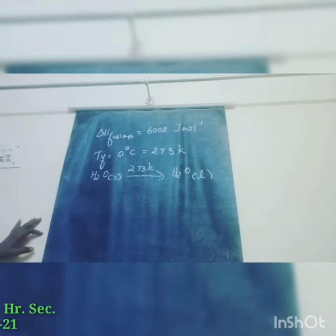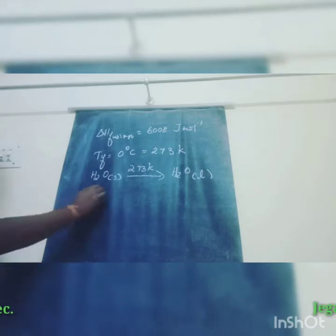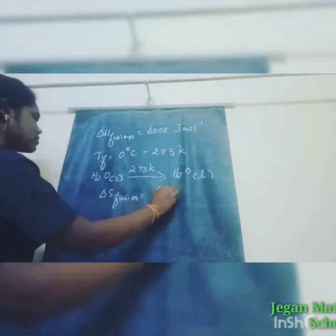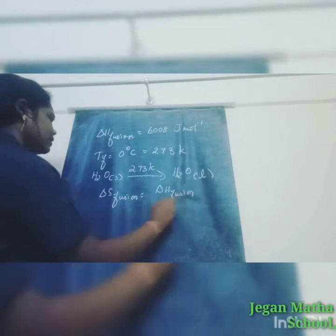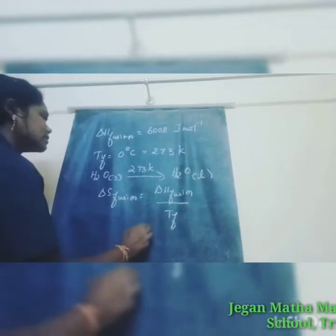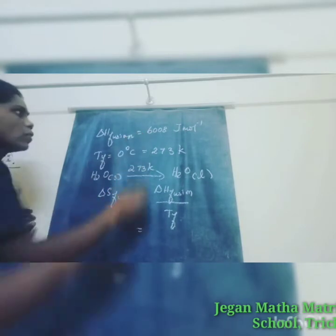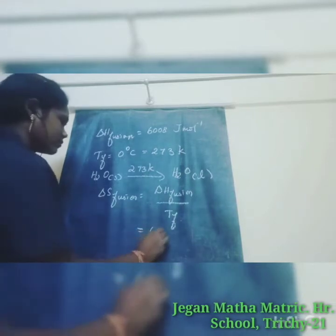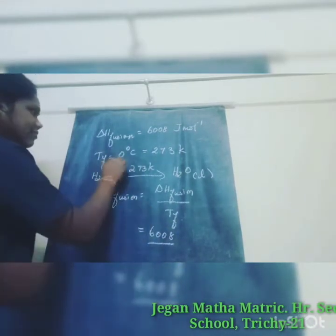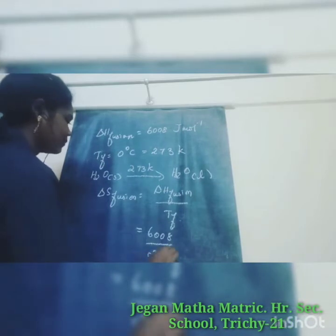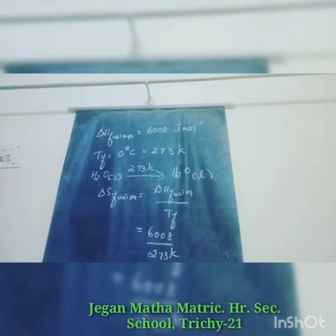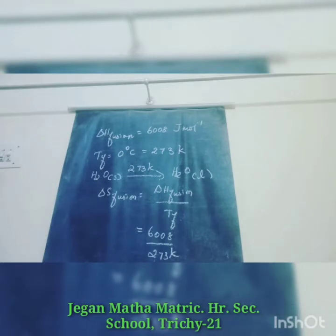The formula for entropy of fusion is: ΔS_fusion = ΔH_fusion / Tf. ΔH_fusion is 6008 joule per mole, and Tf is 273 Kelvin. Simplifying, we get 22.007 joule per Kelvin per mole.